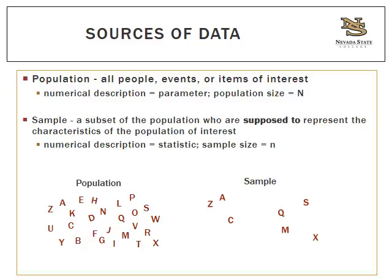For a sample, a numerical description of a sample characteristic — like the average age of NSC students in America — would be called a statistic. If I was interested in the average age of all Americans but only had access to NSC students, that would be my sample — a poor representation, but a sample nonetheless. The statistical notation for the size of a sample is a lowercase n. If there were 3,000 NSC students examined, my lowercase n would be n equals 3,000.